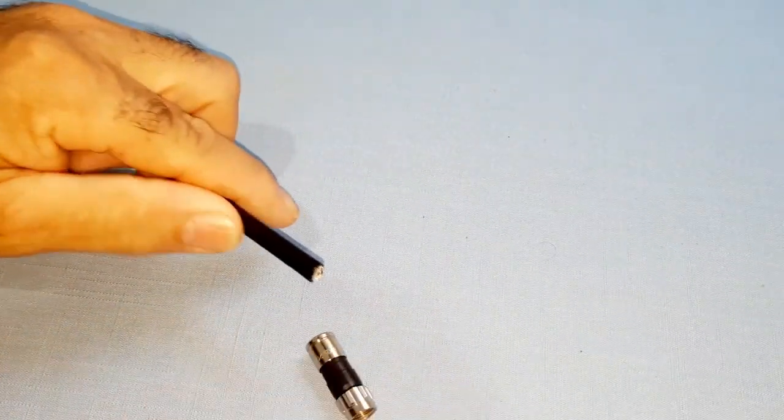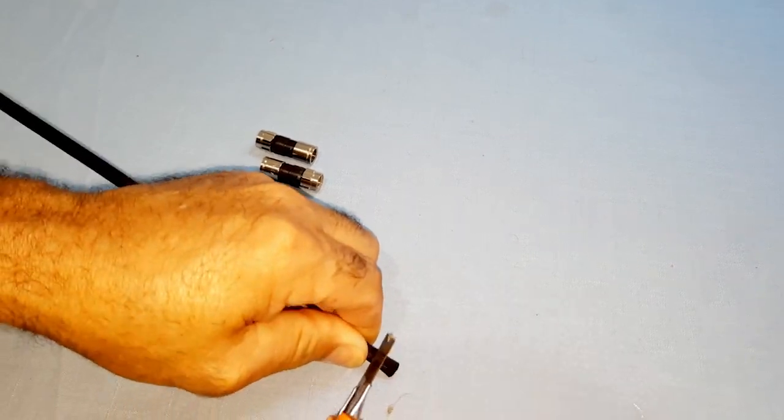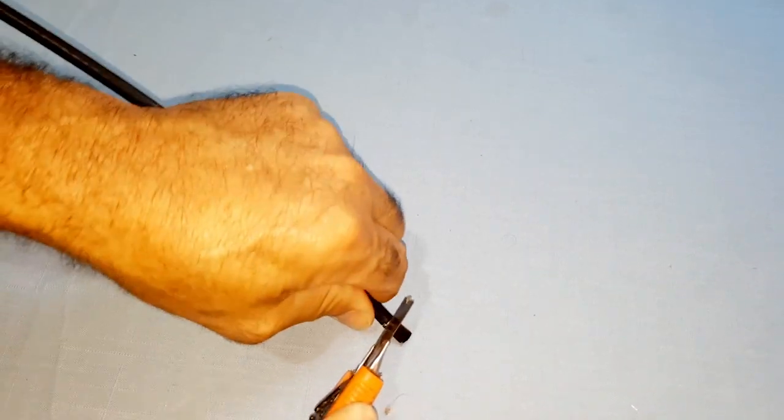To carry out this project, follow these steps. Gather the materials: 62 cm of RG6 coaxial cable and 2 F-type connectors.